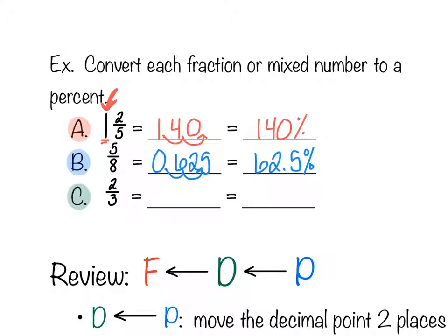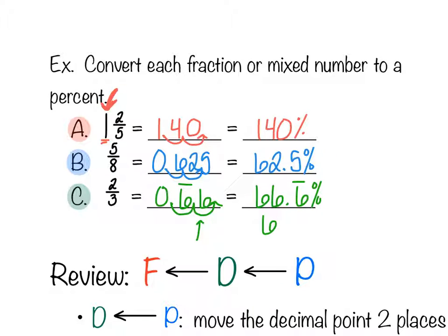In example C, two-thirds — we know 0.6 repeating equals two-thirds. Sliding the decimal two spots to the right gives us 66.6 repeating percent. You can't put a repeating bar over a percent, so we write 66.6 repeating percent. If entering into Big Ideas homework, replace 0.6 repeating with two-thirds and express it as 66 and two-thirds percent.